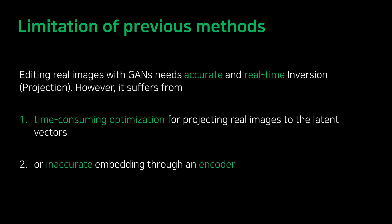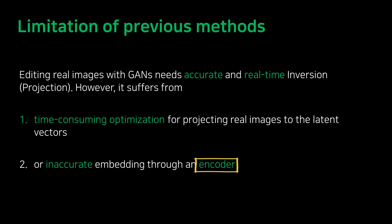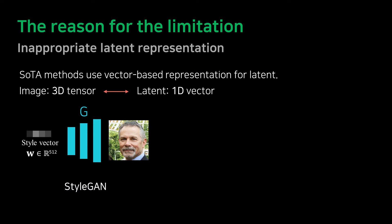Existing methods perform inversion mainly in two ways. First is the optimization method, which takes an extremely long time — we run iteration for each image and optimize the target latent, but it takes from a few seconds to several minutes, so it's difficult to be used in real-time. The second method is to train the encoder to perform the inversion. This is real-time, but has its limitations as well because of inaccurate embedding. We found that the reason for such limitations of existing methods lies in improper latent representation.